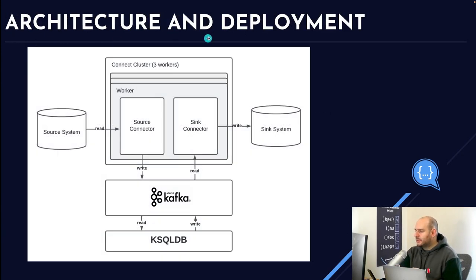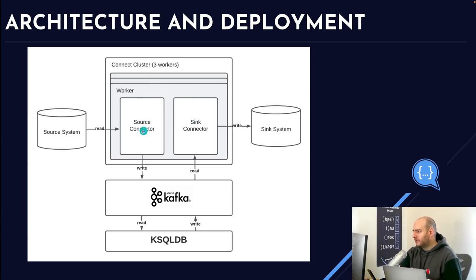Let's talk about the architecture and deployment of Kafka Connect and ksqlDB. A connect cluster has multiple workers — each worker can have source connectors and sink connectors, depending on what you want to do. You also have the source system and the sink system. Every read and write operation is a task being performed by the worker.